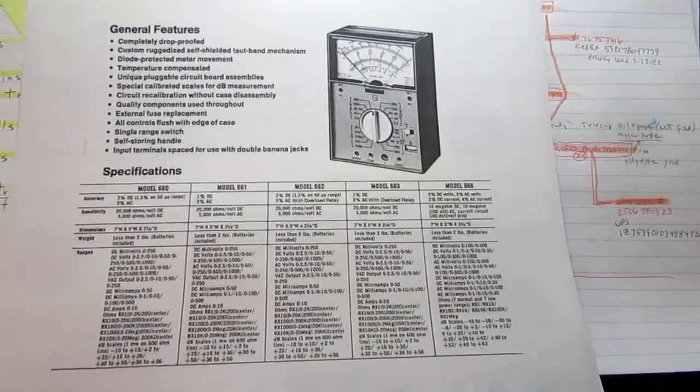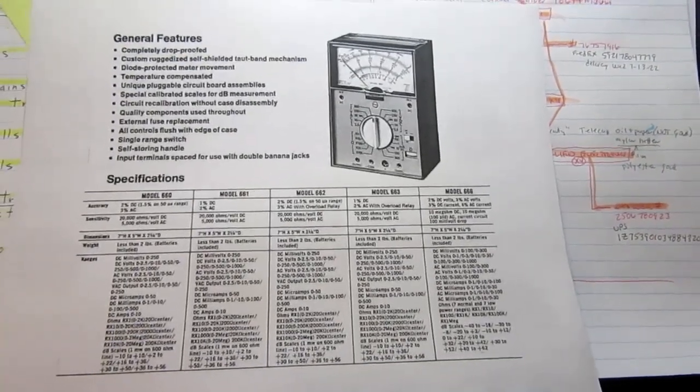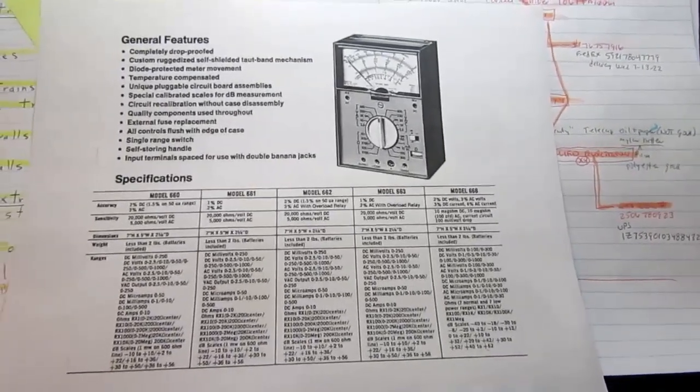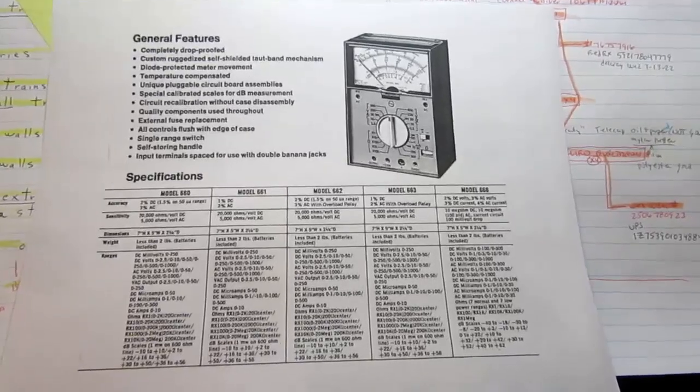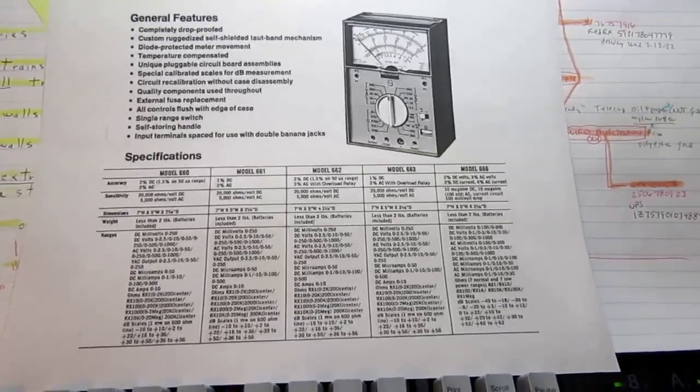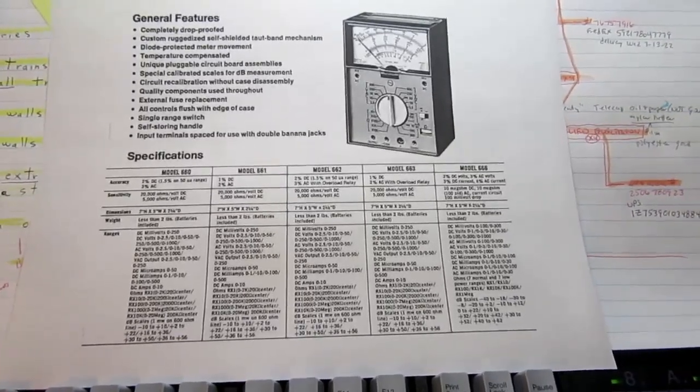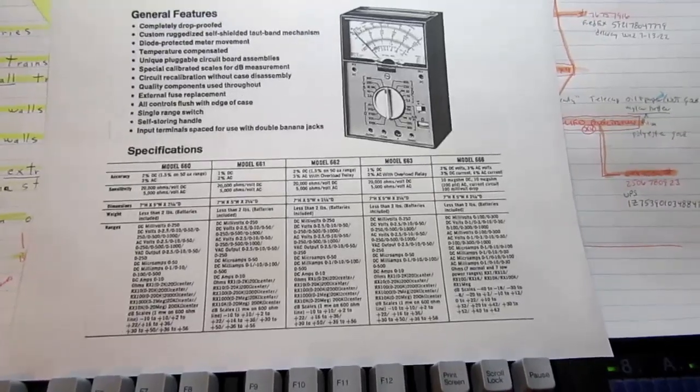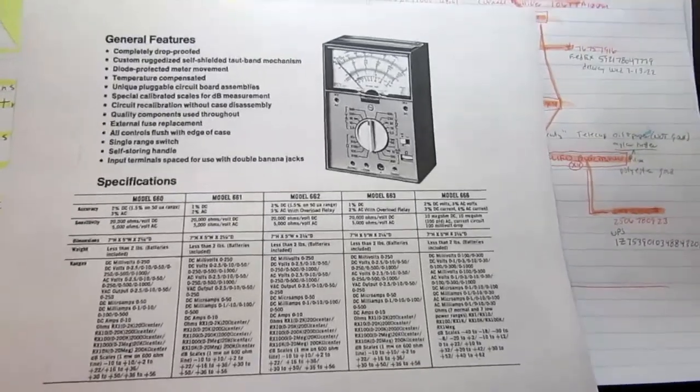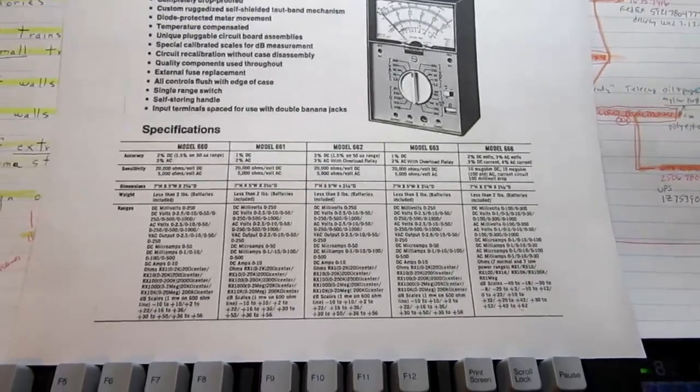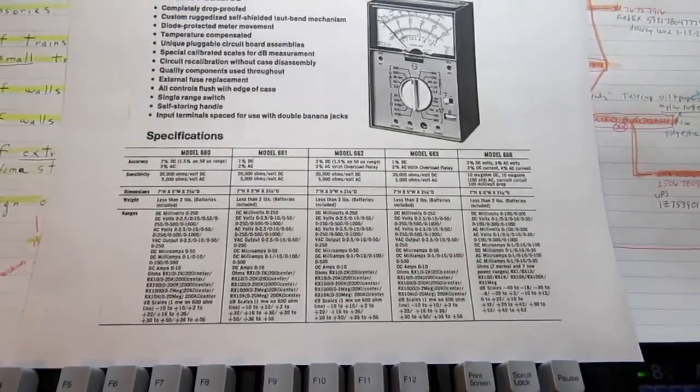This video is a relatively short follow-up to my previous video on the Heathkit IM-105 volt-ohm-milliamp meter. This is about the Weston Model 660 multimeter, which is the source instrument for the IM-105.